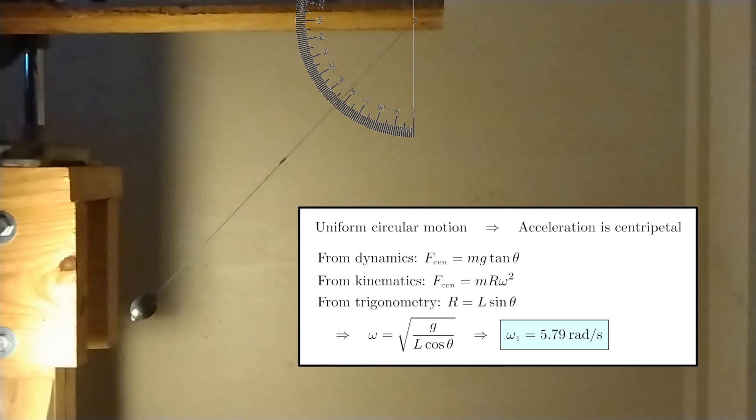Now, we can use the equations of dynamics, namely Newton's second law, to find that the centripetal force is mg tangent theta, where m is the mass of the pendulum and g the acceleration due to gravity. But, we can also apply kinematic equations to find out that the centripetal acceleration is equal to r omega square, where omega is the angular velocity. Therefore, the centripetal force must be equal to m r omega square. Putting everything together, we conclude that omega is the square root of g over L cosine theta. With our values for the string length and the angle, we find an angular velocity of 5.79 radians per second.